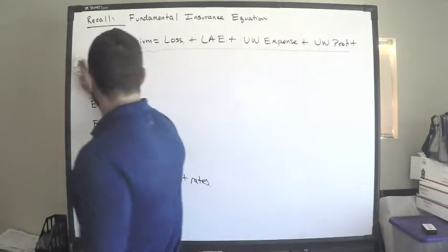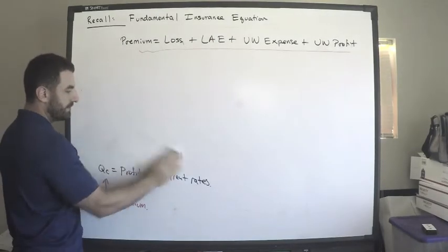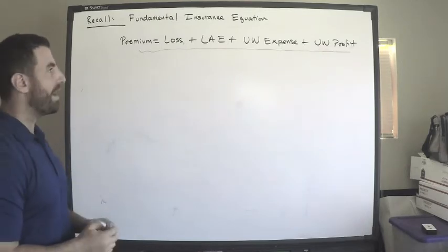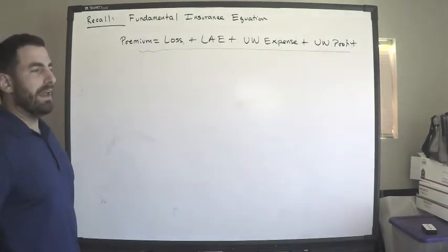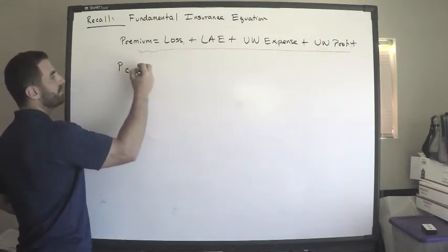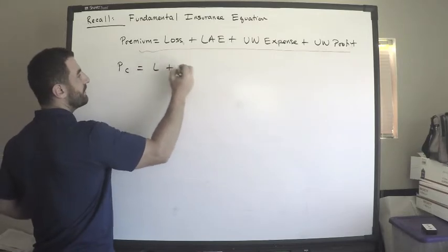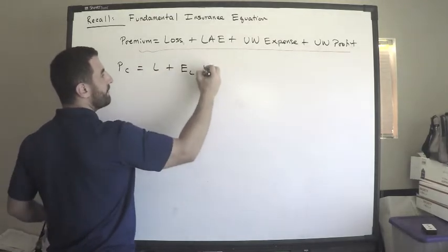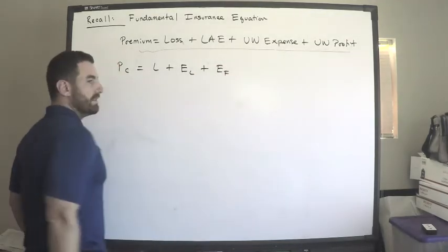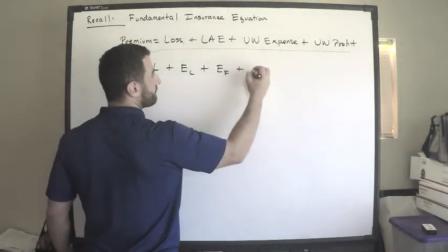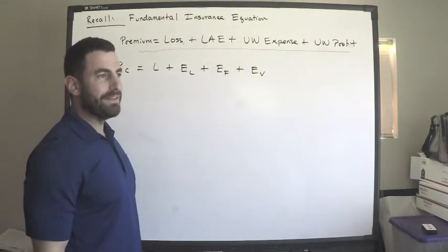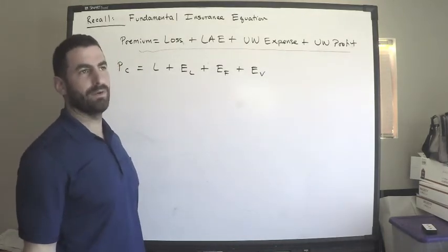So what we're going to do a little bit different than the prior video is we're going to rephrase this equation in terms of what's currently happening right now. So we have the premium at current rates is equal to the losses plus the loss adjustment expense, plus now the underwriting expense. Recall, can be written as the fixed expense plus the variable expense.